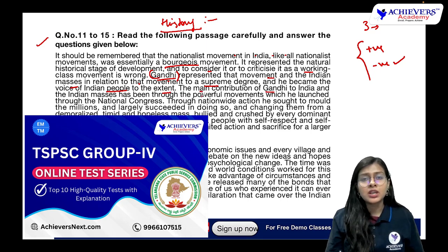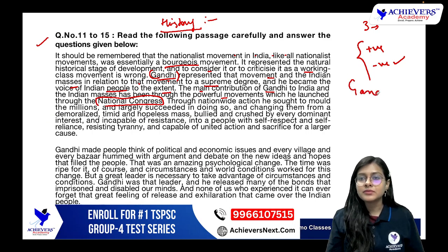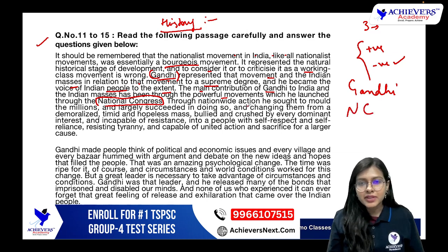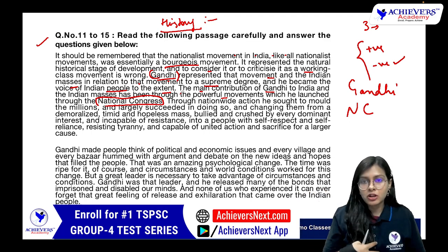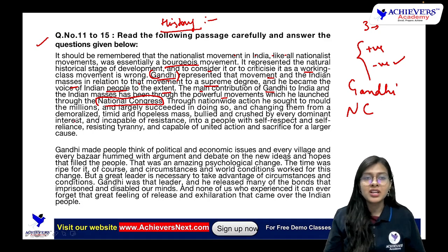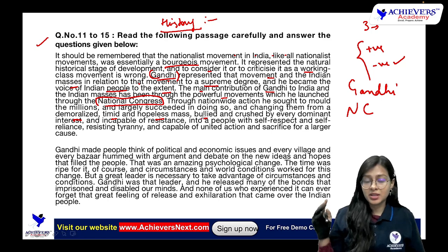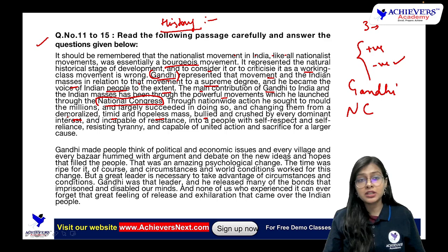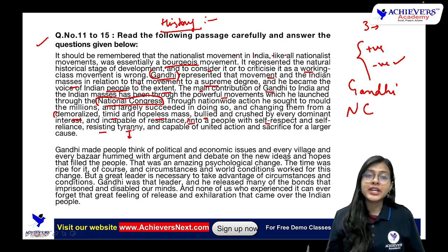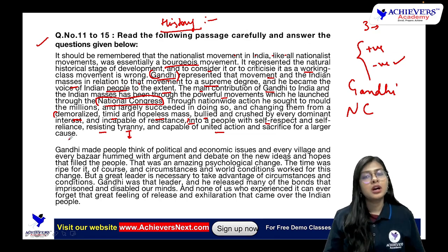The main contribution of Gandhi to India and the Indian masses has been through the powerful movement which he launched through the National Congress. Through nationwide action he sought to mold the millions and largely succeeded in doing so, changing them from a demoralized, timid — meaning cowardly — hopeless masses, bullied by the British and crushed by every dominant interest and incapable of resistance. He turned these people into a people with self-respect and self-reliance, resisting tyranny — meaning cruelty and dominance.